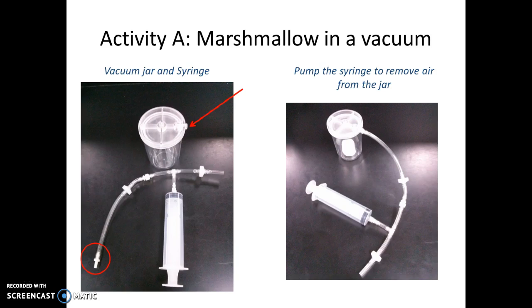You want to do several pumps with the syringe, approximately ten times, to remove air from the jar. As you're pumping you're going to hear air exiting the open side of your tubing, and you should notice a vacuum seal at the top of the jar where your marshmallow is. Write down your observations of the marshmallow when it's in the vacuum. When done, let air back into the jar by disconnecting the tubing at the side of the jar.